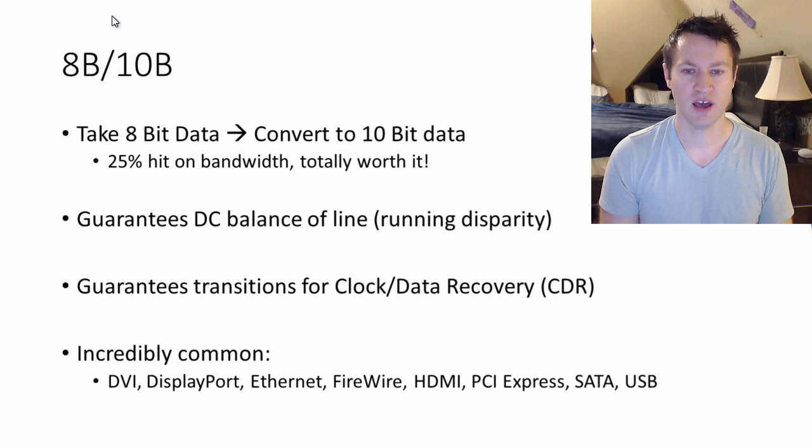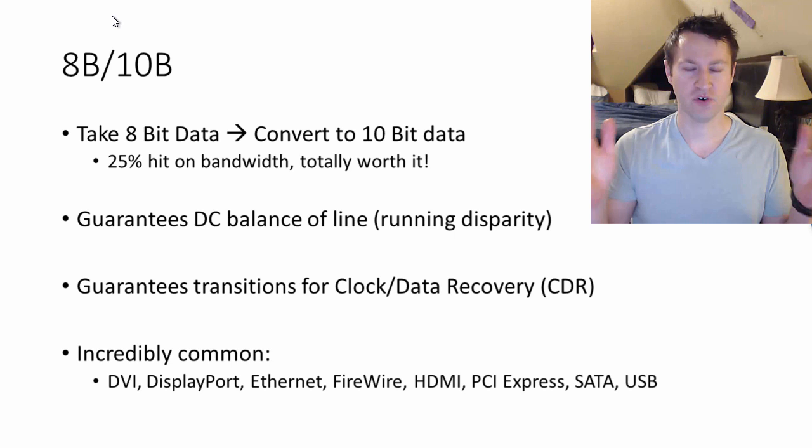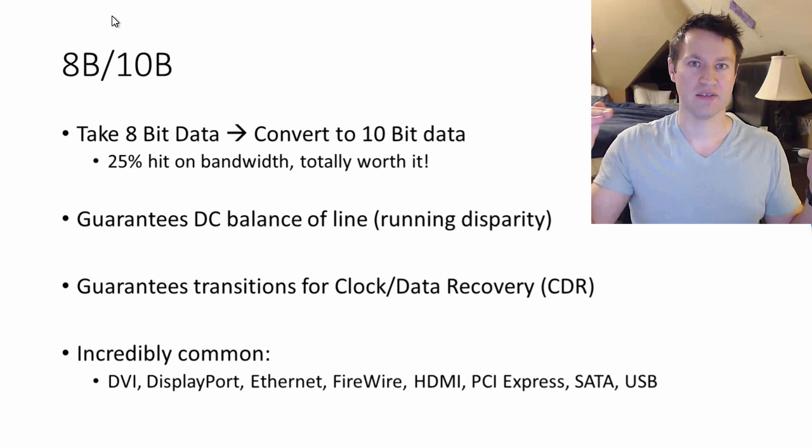One, it guarantees something called the DC balance of your line. DC is direct current. Basically the voltage at which your channel is sitting at is guaranteed to be DC balanced. If you imagine you send a long stream—if you have an HDMI cable, it's a foot long, and you send 12 ones in a row, that's going to bias your HDMI cable to some positive voltage. It's going to charge up the actual wires that are on your cable.